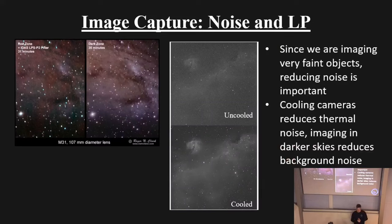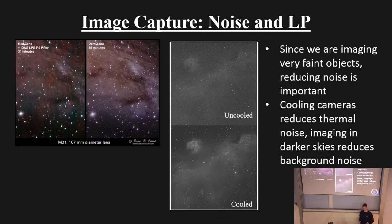Reducing noise is important, and we can improve it by cooling the camera. The camera itself has a temperature, and that temperature produces photons which create noise in the image. Dedicated astro cameras can cool to about 45 degrees below ambient — so on a 20-degree night you can cool to around minus 25. The difference is very clear: uncooled images are much grainier with far less detail, whereas a cooled image shows greatly reduced noise.